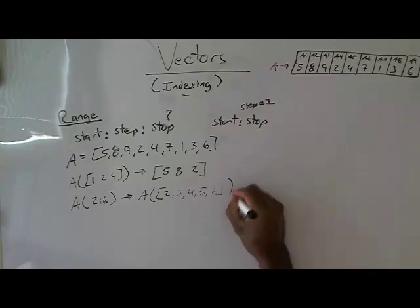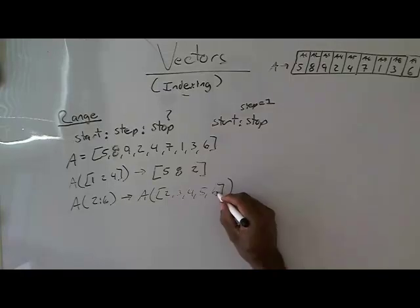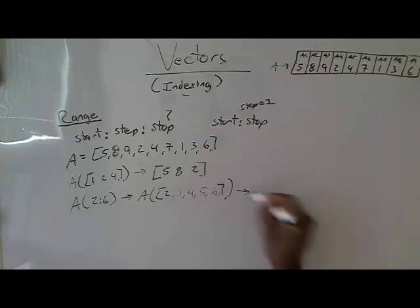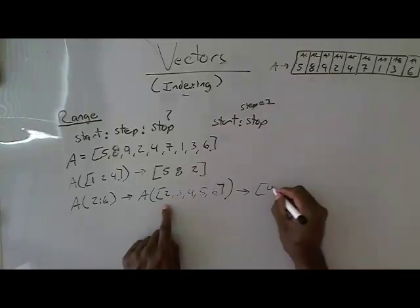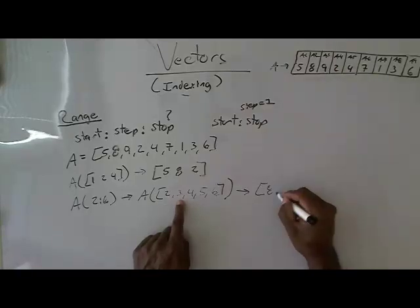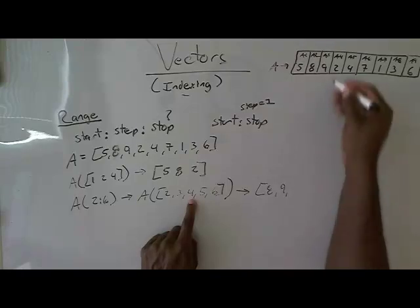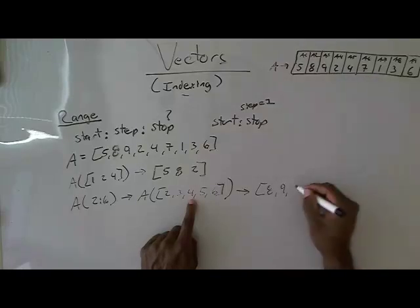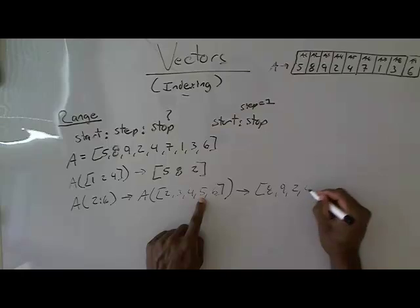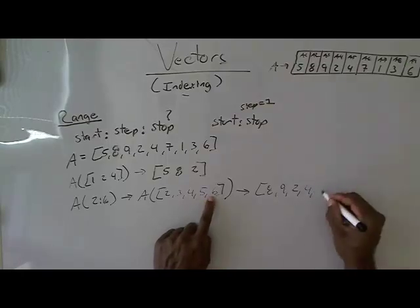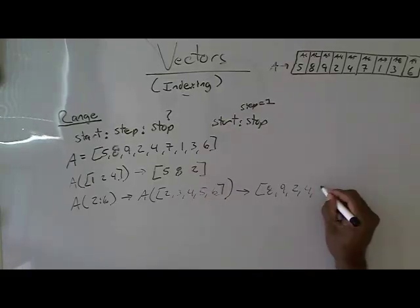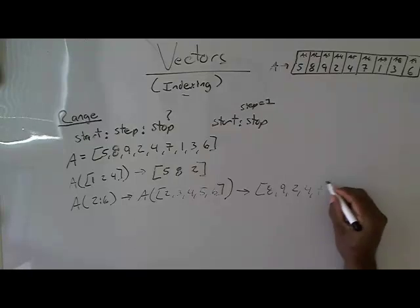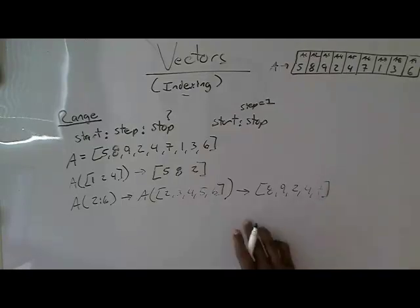So if I indexed at those at two, three, four, five, and six, then that's going to give me the vector A indexed at two is eight, A indexed at three is nine, A indexed at four is two, A indexed at five is four, and A indexed at six is seven. And so that would give me this vector there: eight, nine, two, four, seven.